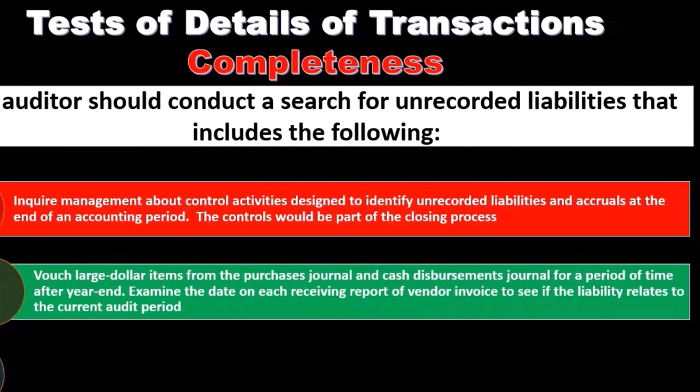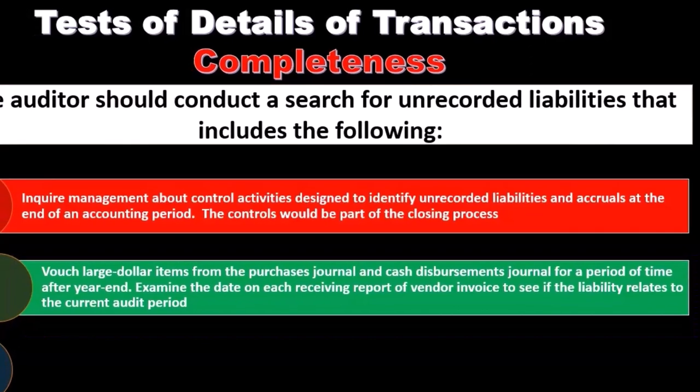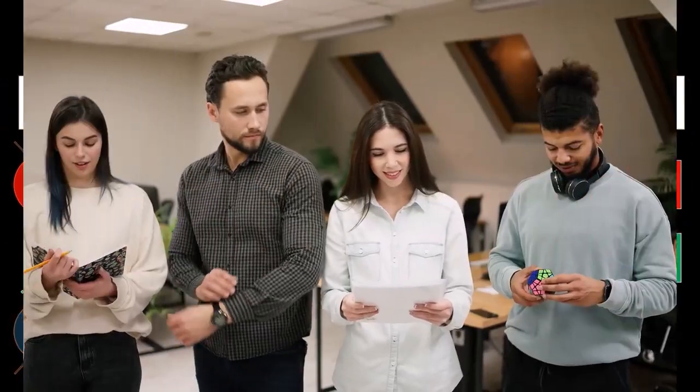Vouch large dollar items from the purchases journal and cash disbursements journal for a period of time after year end. Because we're doing the audit as of, say, December 31st, we are conducting the audit at some point after that date. So we can actually look at transactions that happened after the year closed and use them as part of our testing process.